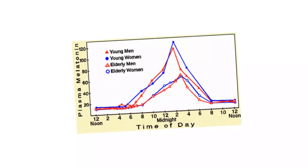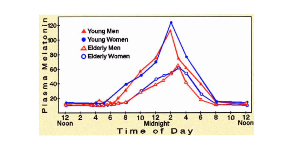As people age, nighttime melatonin levels become lower. There's not much difference between men and women, but young men show a pattern that rises and drops, whereas elderly men show a lower pattern. Other data following people at ages 10, 20, 30, and 40 showed basically a stepwise decrease in peak melatonin levels during the night.